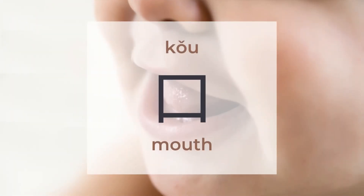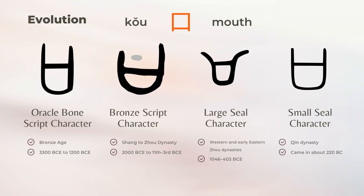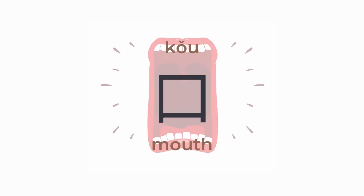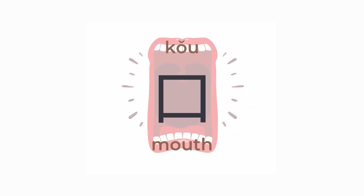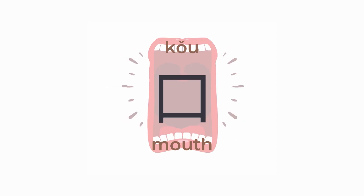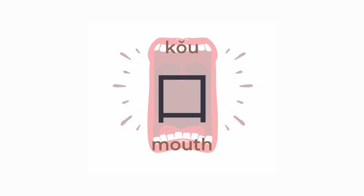口 means mouth. There are around 1,146 characters to be found under 口. 口 is a pictogram with one form. 口 mainly shows on the left side of characters, and sometimes in other parts.